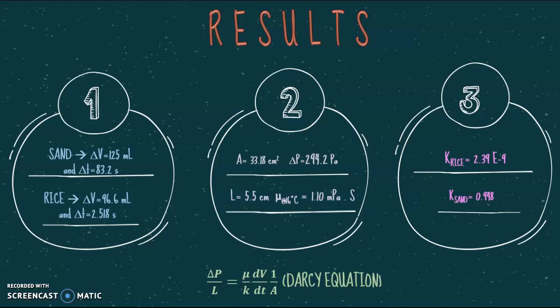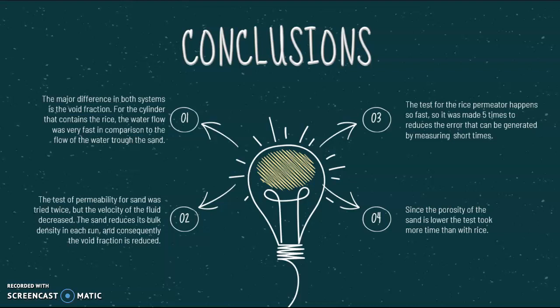And then, from the Darcy equation, the permeability constant was determined. For rice, it was 2.39 times 10 to the minus 9 and for sand, it was 9.48 times 10 to the minus 10.